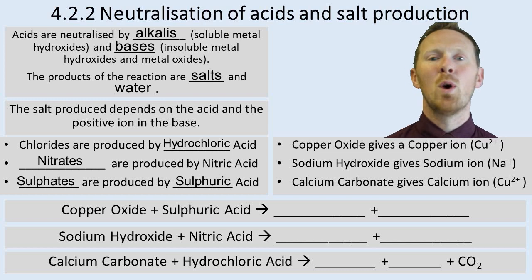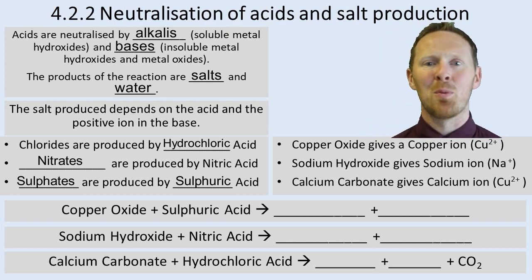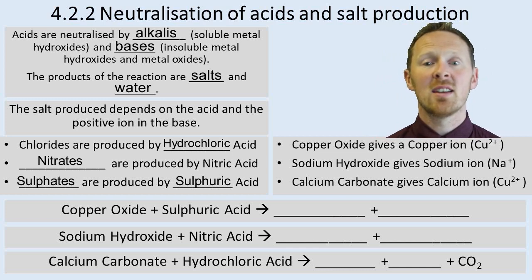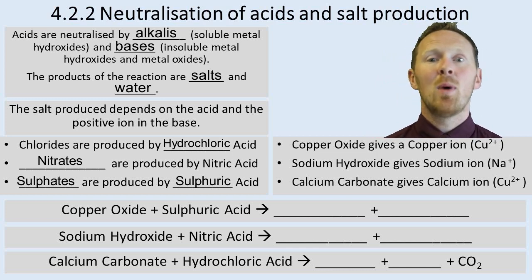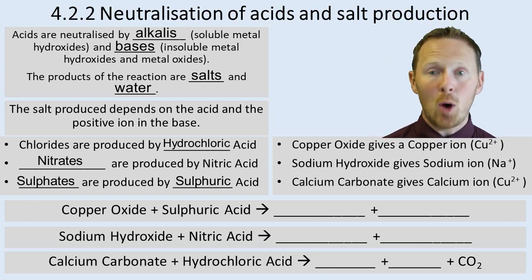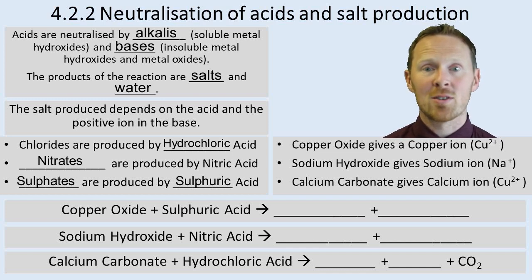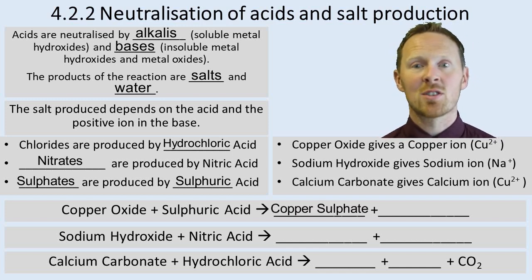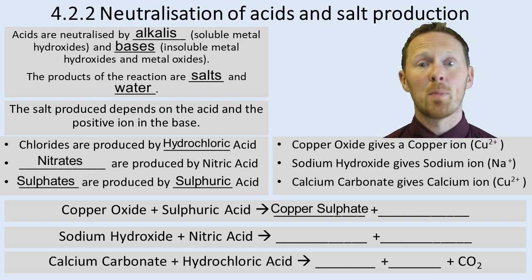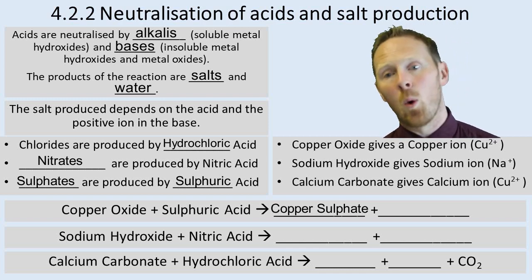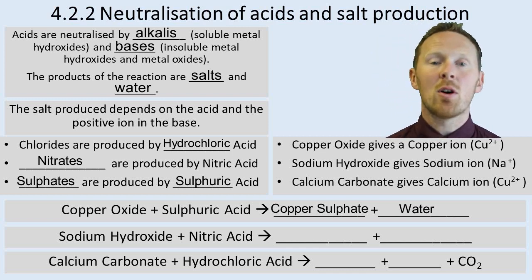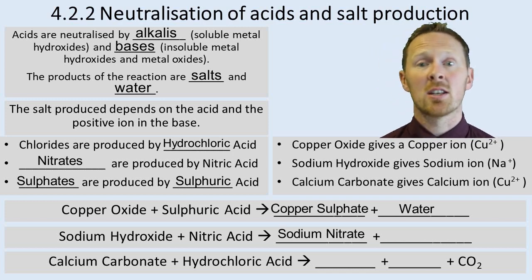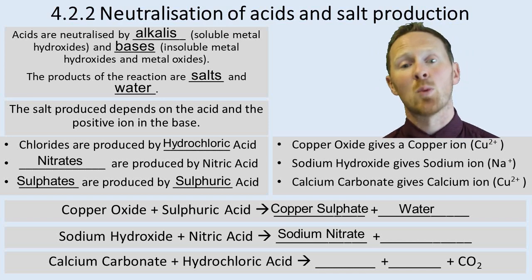Let's have a look at some word equations. Copper oxide reacts with sulfuric acid to make copper sulfate and water — the salt is copper sulfate because we've got copper ions from the copper oxide and sulfate because we've used sulfuric acid. Sodium hydroxide reacts with nitric acid to give sodium nitrate, because we've used nitric acid, and water.